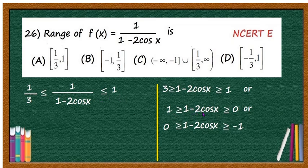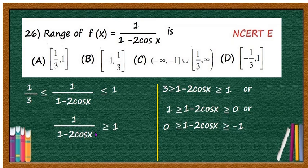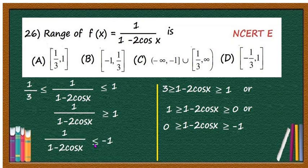When any function lies between 0 and 1, its reciprocal will be greater than or equal to 1. That is, 1/(1 - 2cos x) may be ≥ 1. When the number lies between 0 and -1, its reciprocal will be ≤ -1. Therefore, 1/(1 - 2cos x) may be ≤ -1.